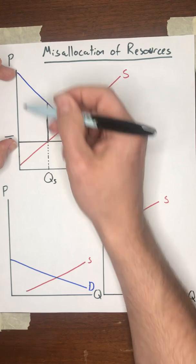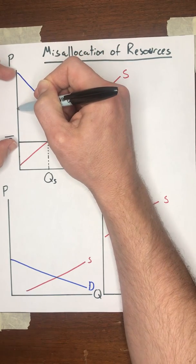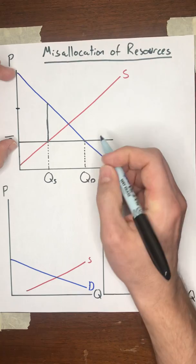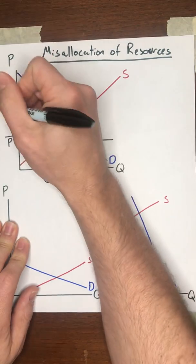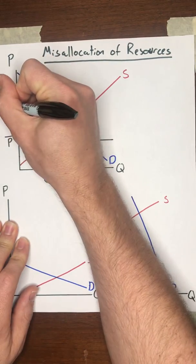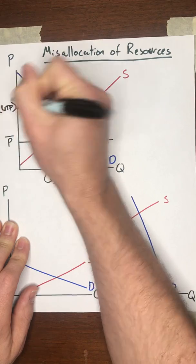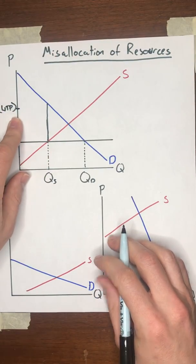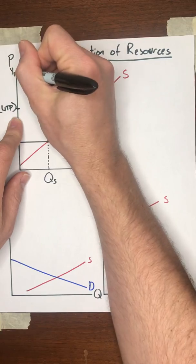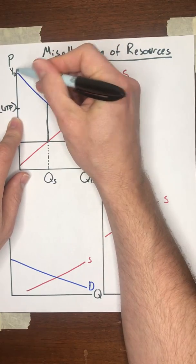I'm going to call that the average willingness to pay. And the formula for the average willingness to pay, remember, the y-intercept of the demand curve is YD.